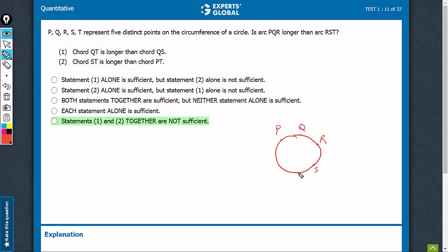Let's just imagine S and T somewhere for ease of solving. Remember, S and T could have been on either side. Let's look at the first statement. The question is asking whether arc PQR is bigger than arc RST.